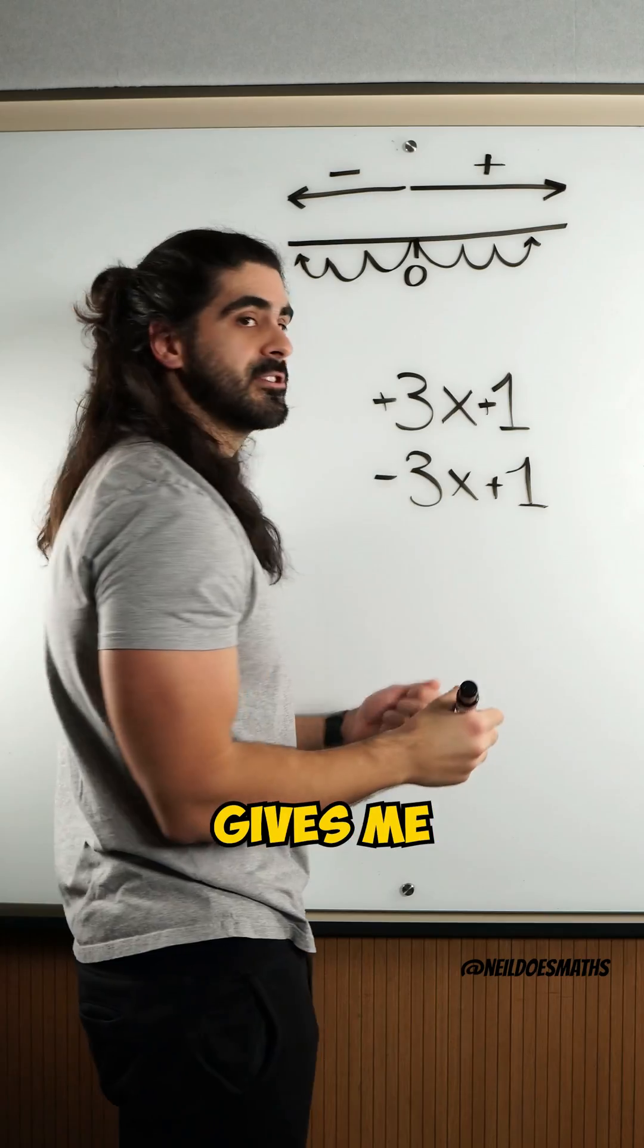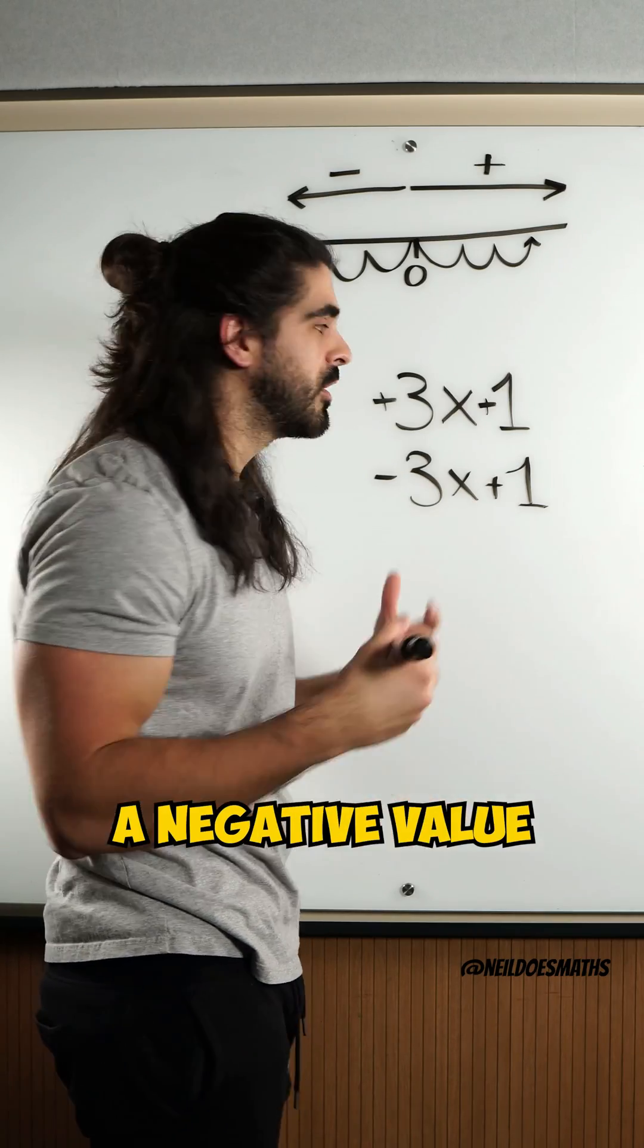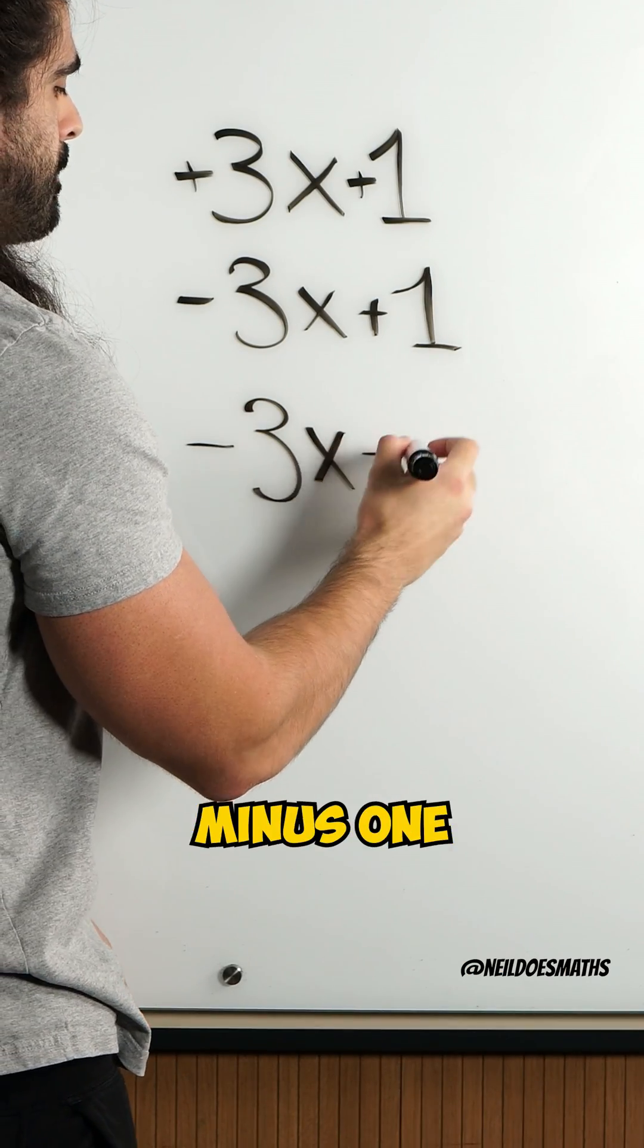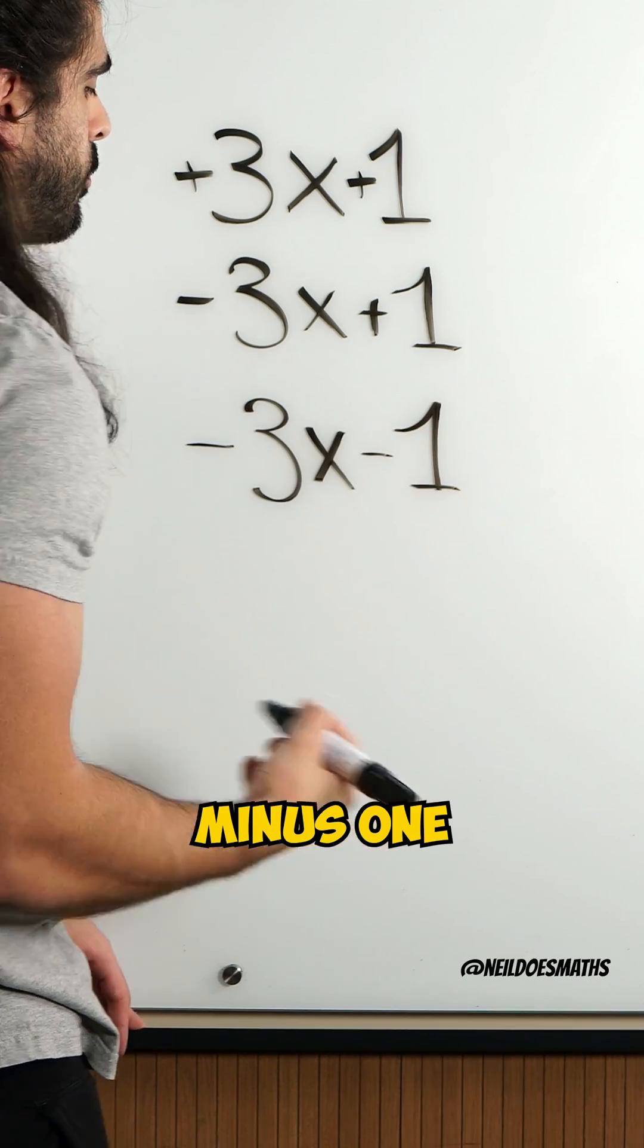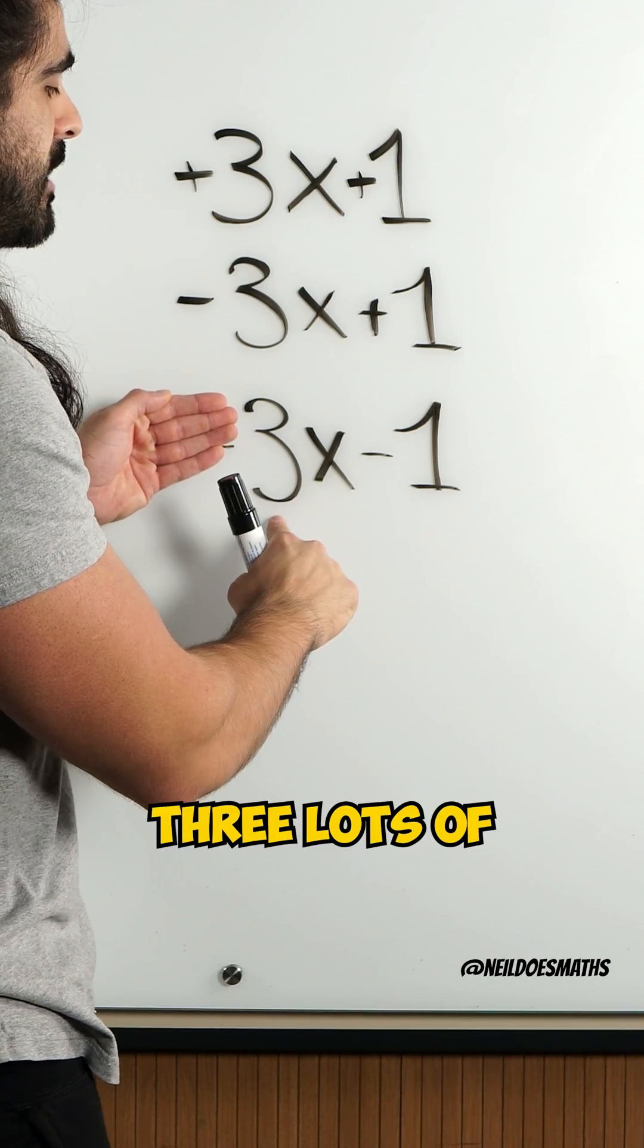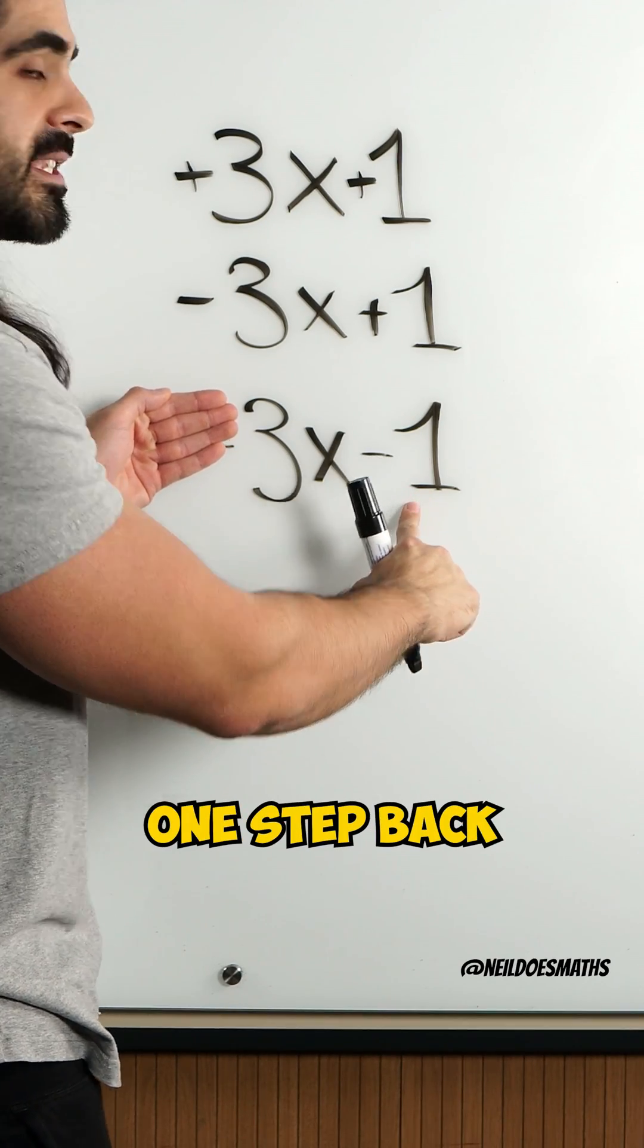This positive and negative gives me a negative value. What happens then when I have 3 lots of minus 1? Well, if I just have 3 lots of minus 1, I'm doing 3 lots of 1 step back.